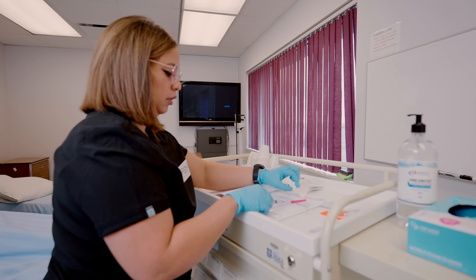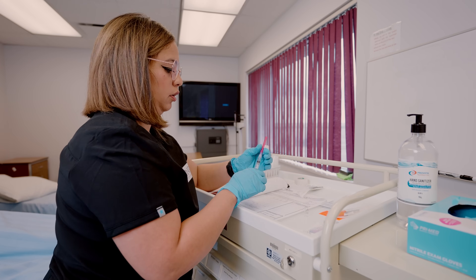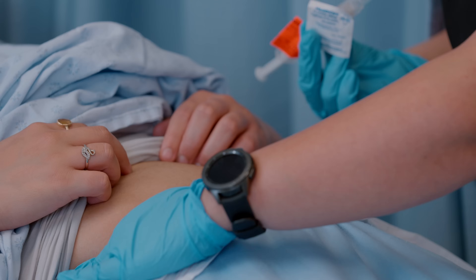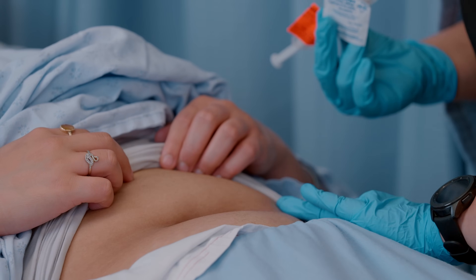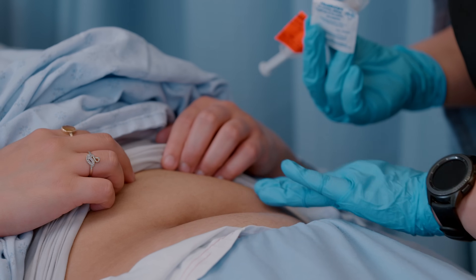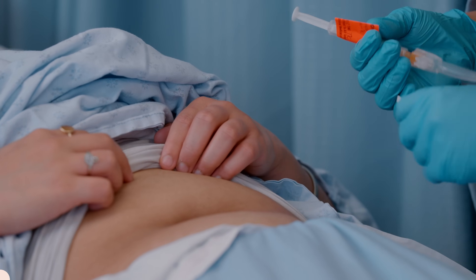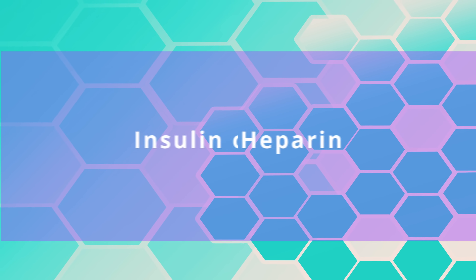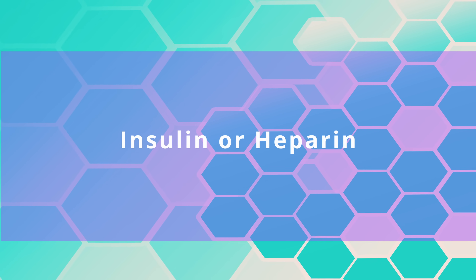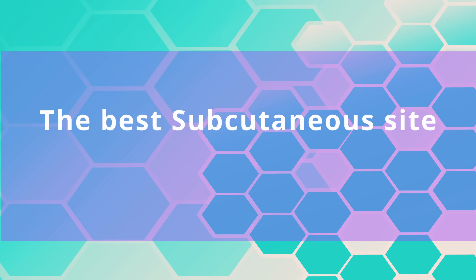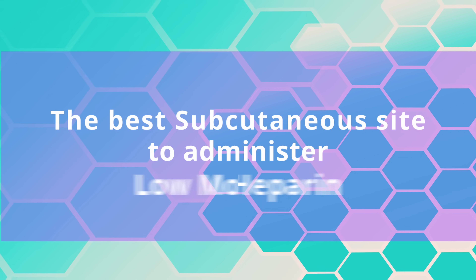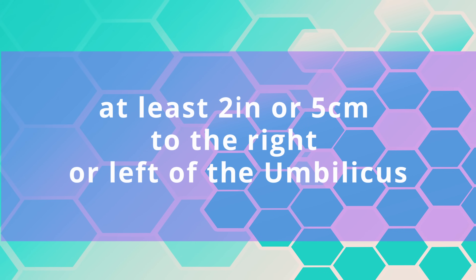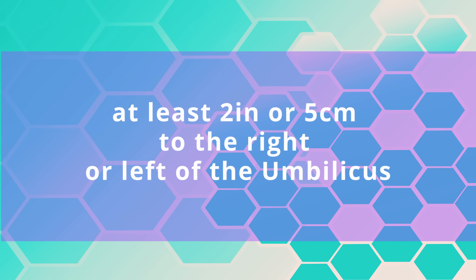Make sure you are using the right needle size according to your patient's build. Using your thumb and forefinger, grasp a skin fold of tissue at the injection site. Measure the fold from top to bottom and ensure the needle is about half as long. Give preference to abdominal injection sites when administering insulin or heparin. Specifically, the best subcutaneous site to administer low molecular weight heparin — enoxaparin — is at least 2 inches or 5 centimeters to the right or left of the umbilicus.